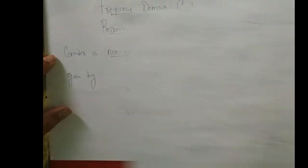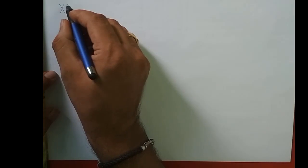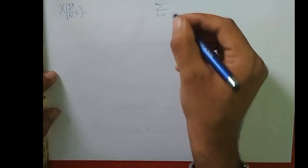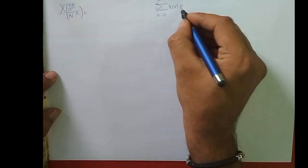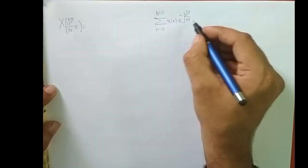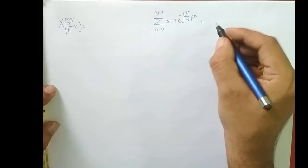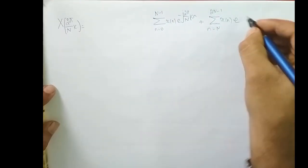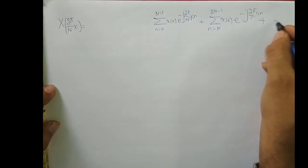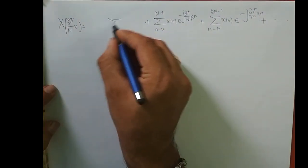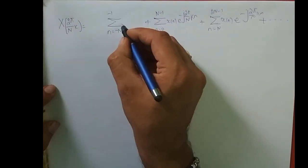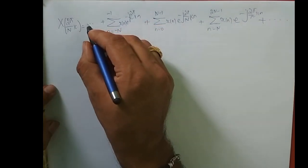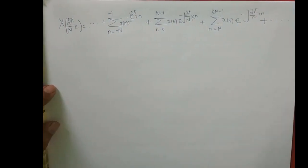Let me write that equation once again. X(2π/N · k) equals summation n from 0 to N-1 of x[n] e^{-j2π/N · kn}, plus summation n from N to 2N-1 of x[n] e^{-j2π/N · kn}, plus the negative side summation n from -N to -1 of x[n] e^{-j2π/N · kn}, and so on to ±∞.